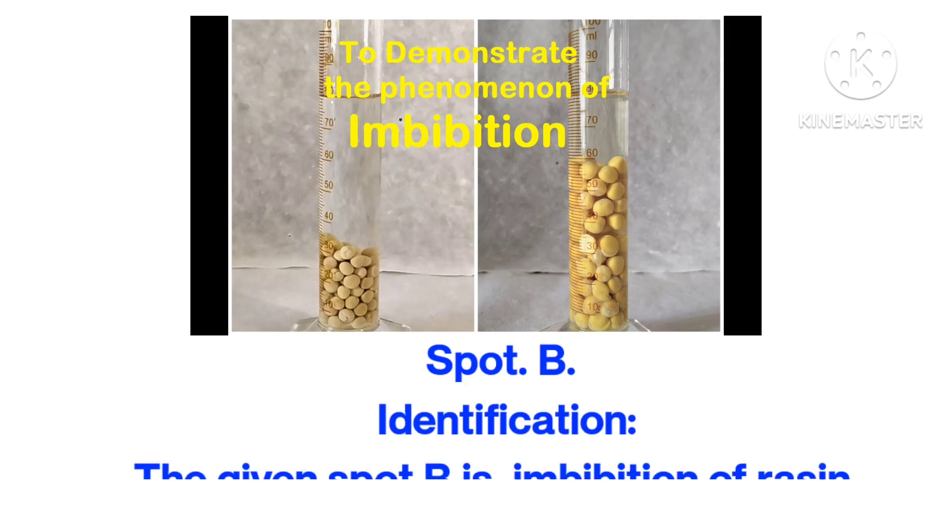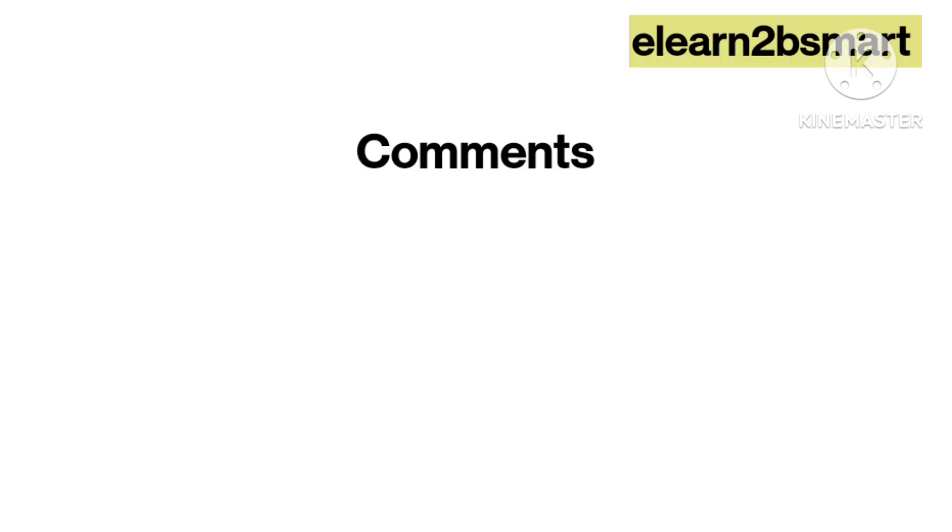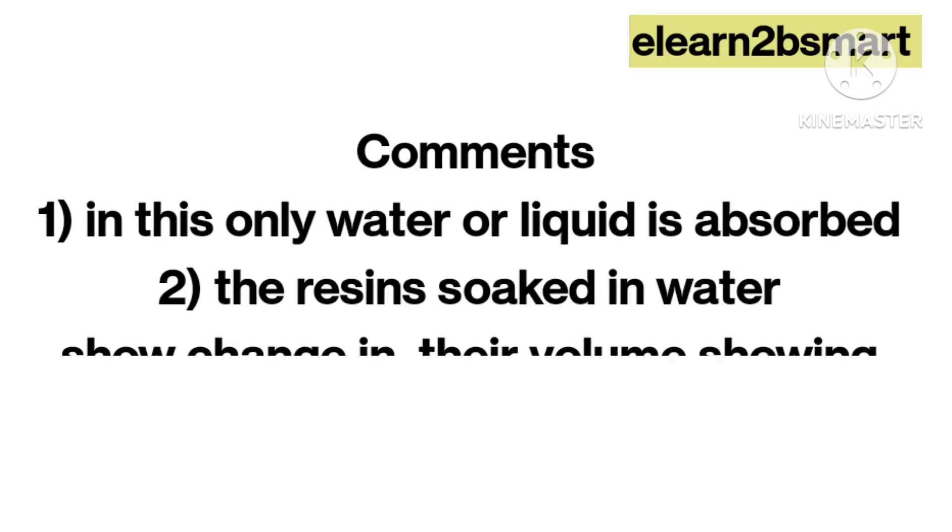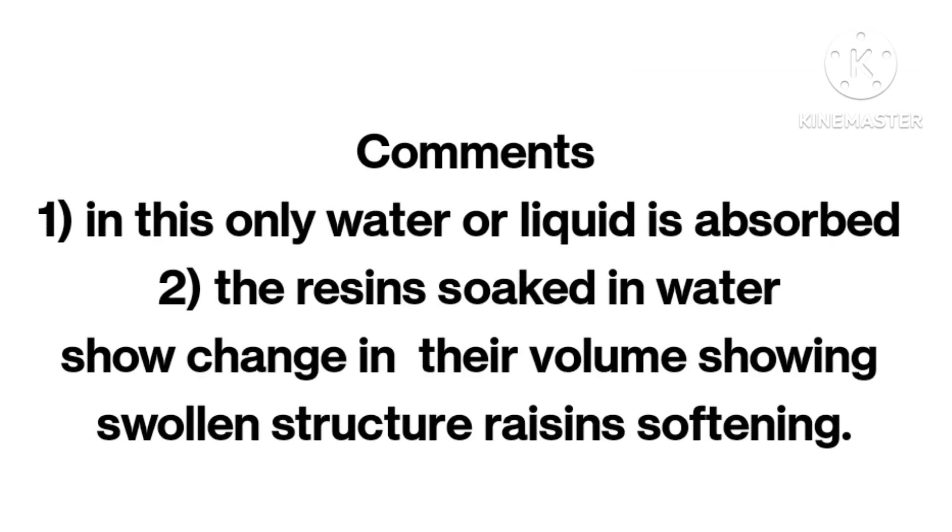Spot B. Identification: The given spot B is imbibition of raisin. Comments: In this, only water or liquid is absorbed. The resins soaked in water show change in volume, showing swollen structure, raisins softening.